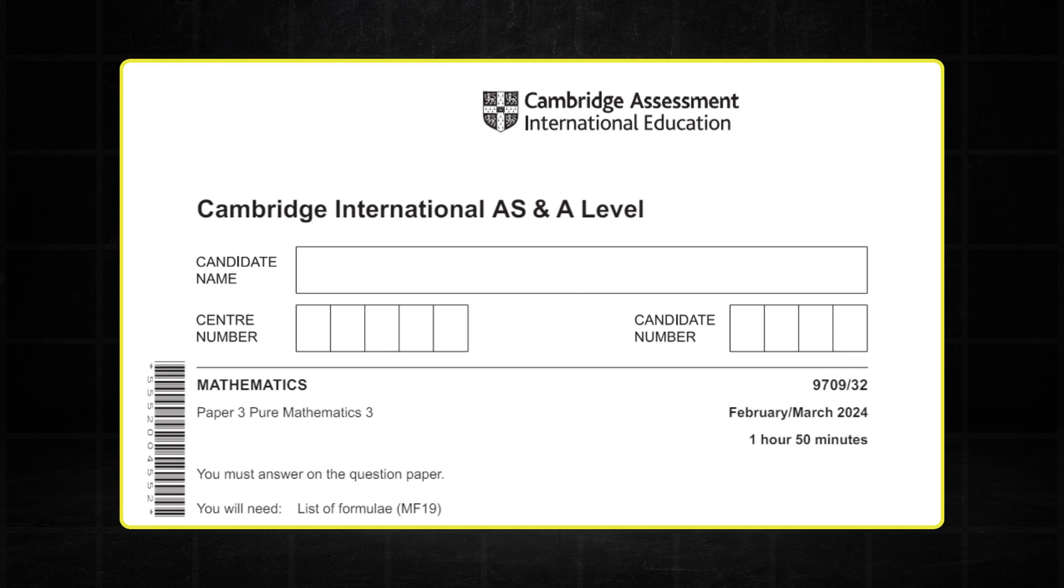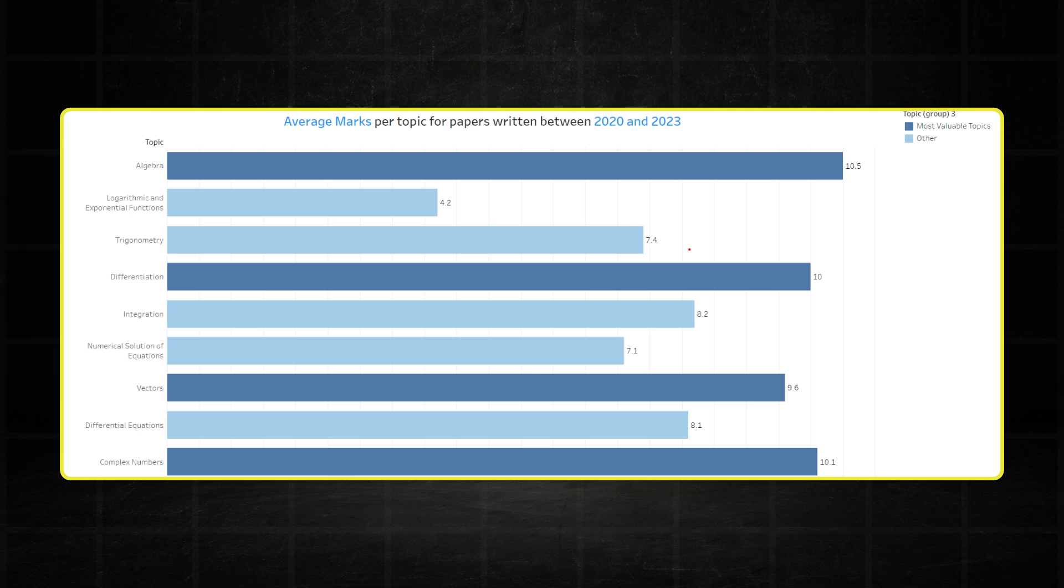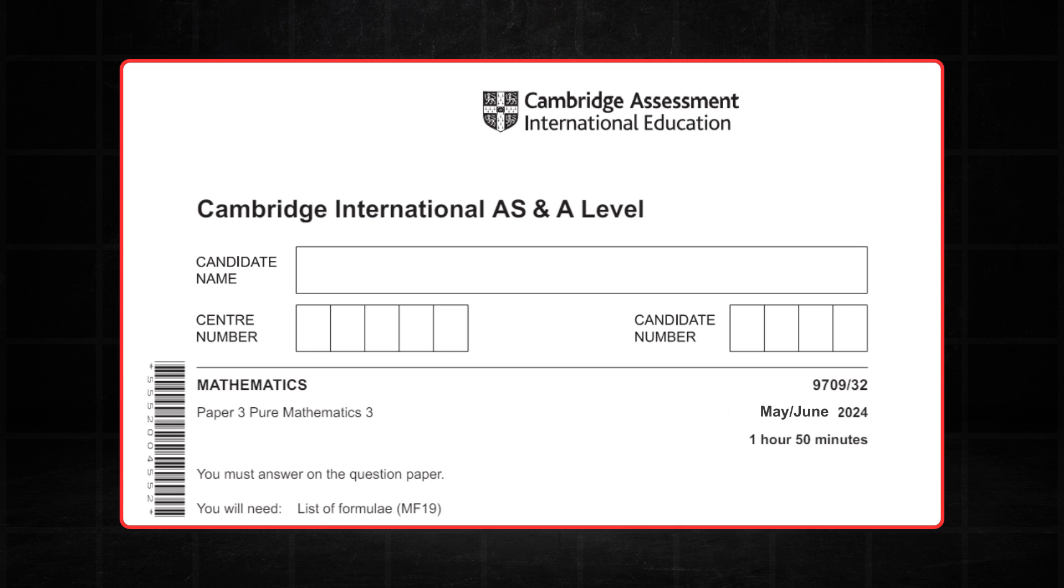We're going to start by analyzing the distribution of marks in the February-March paper, compare these to previous years, we're going to use the trends to help us predict the mark distributions for the May-June papers. Make sure to watch to the end so that you know which topics to look out for in the May-June series.